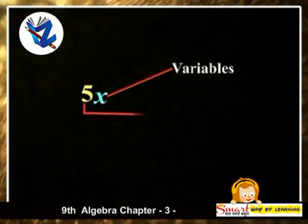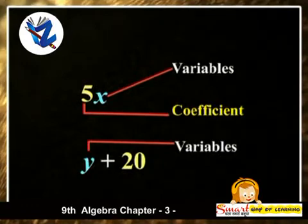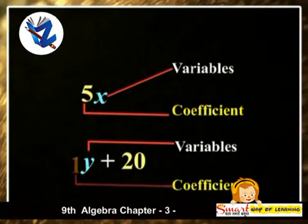In case of 5x, x is the variable and 5 is its coefficient. In case of y plus 20, y is the variable and its coefficient is 1.